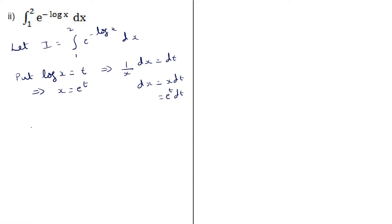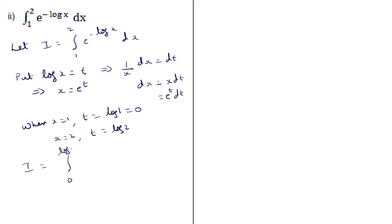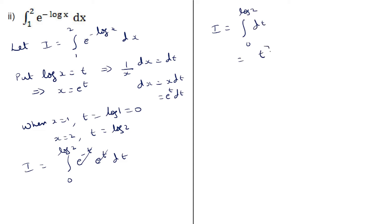We also change the limits. When x = 1, t = log 1 = 0. When x = 2, t = log 2. So the integral becomes ∫(0 to log2). We have e^(−t) and dx = e^t dt. So e^(−t) × e^t = e^t/e^t = 1, these two cancel. So i = ∫(0 to log2) dt = t evaluated from 0 to log 2 = log 2 − 0 = log 2.